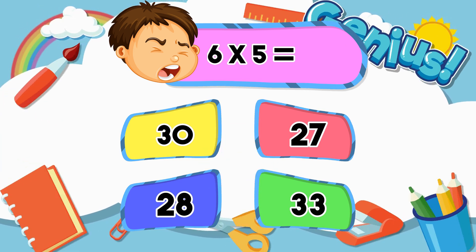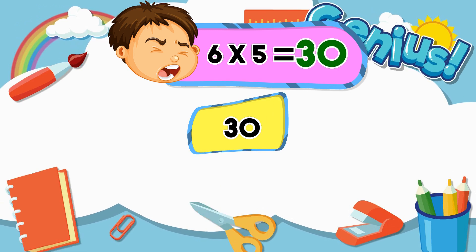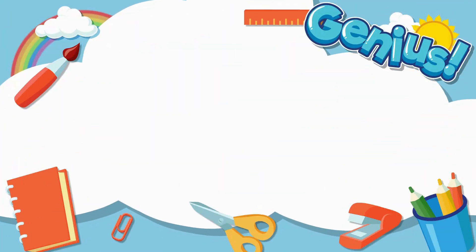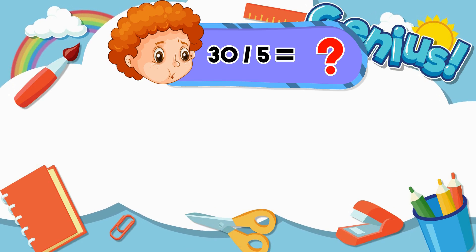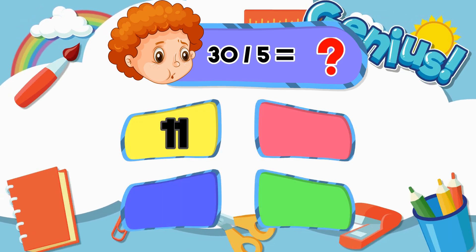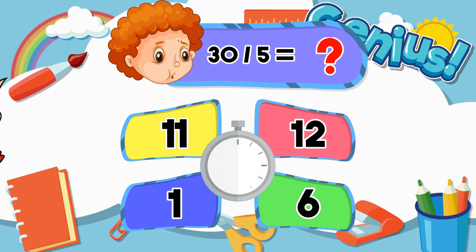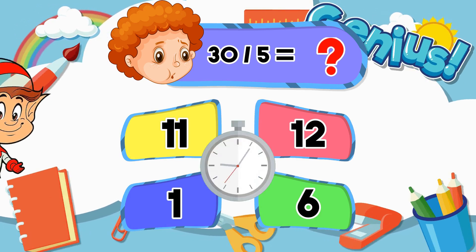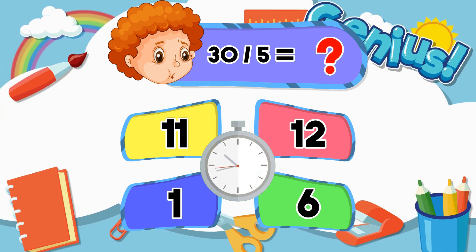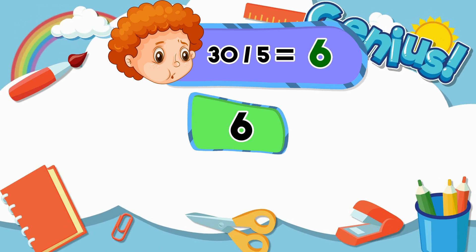What is thirty divided by five? Eleven, twelve, one, six. Six.